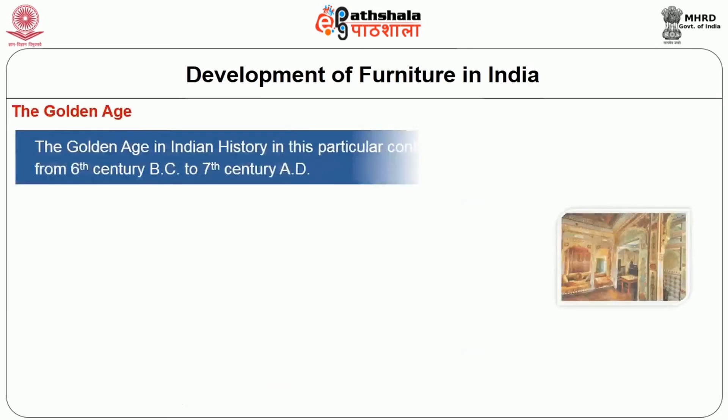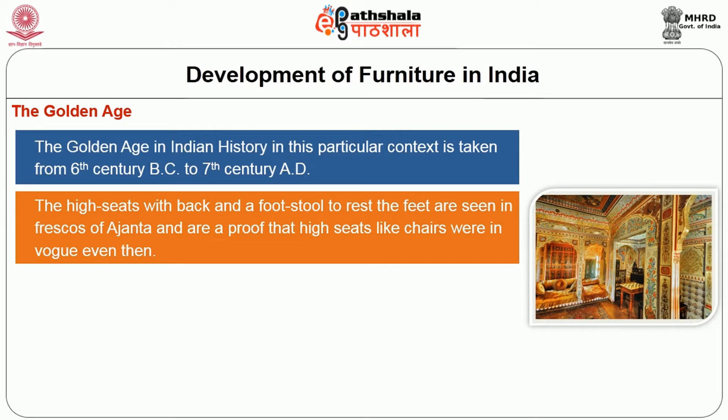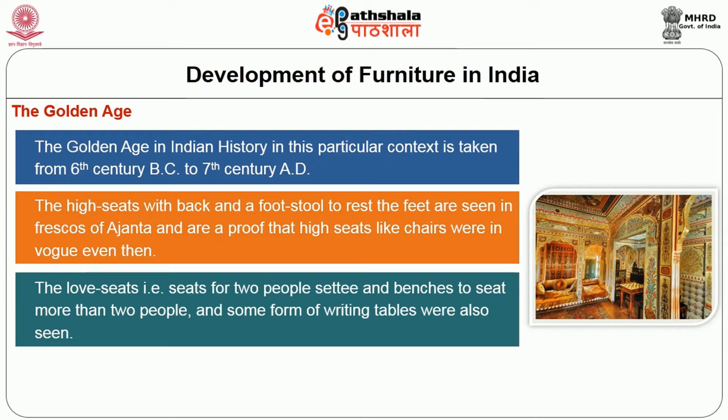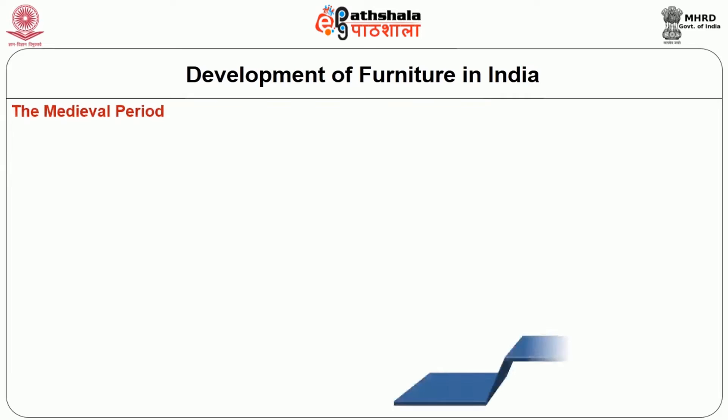The Golden Age: The golden age in Indian history, in this context, is taken from the 6th century BC to the 7th century AD. High seats with a back and a footstool to rest the feet are seen in frescoes of Ajanta, and are proof that high seats like chairs were in vogue even then. Love seats — seats for two people — and some form of writing tables were also seen. The frescoes of Ajanta also show furniture with lathe-turned round wooden legs.